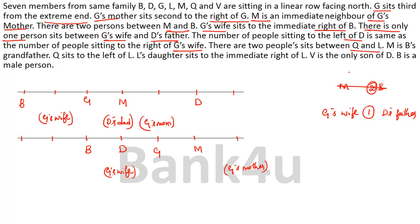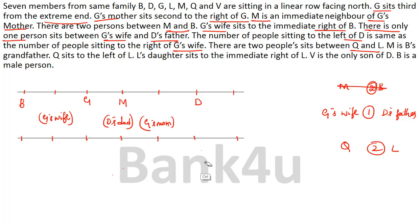Next: there are two people sitting between Q and L. Checking the remaining possibilities — in one arrangement, placing Q or L at the available seats cannot satisfy a gap of two, so that entire possibility is eliminated. In the surviving arrangement, Q or L can be placed at two specific seats with exactly two persons between them. G's wife and D's father gap of one person is also confirmed and done.